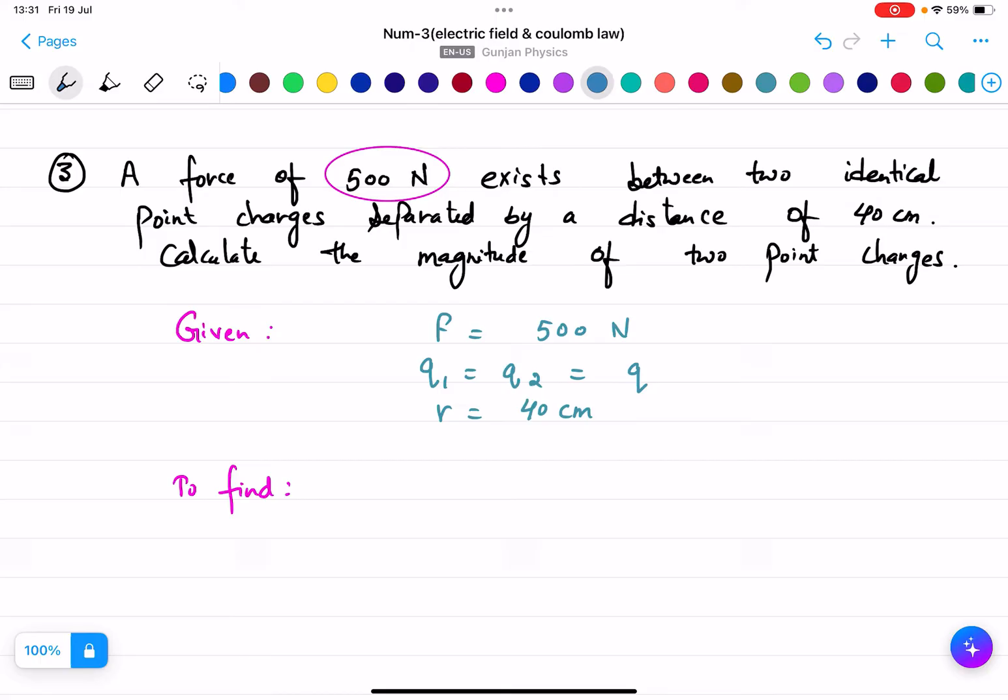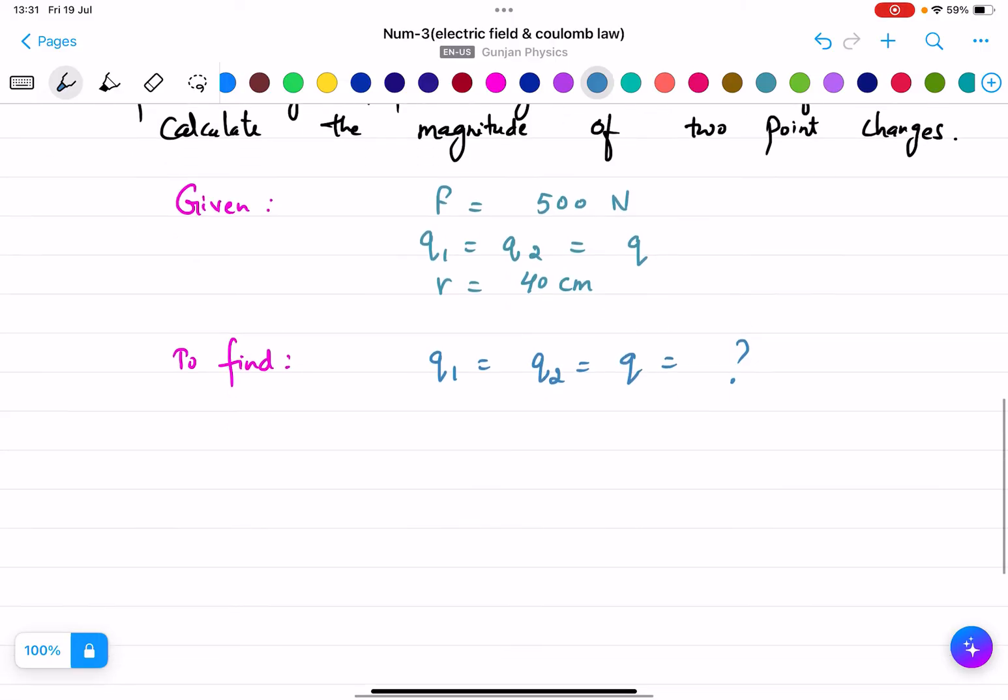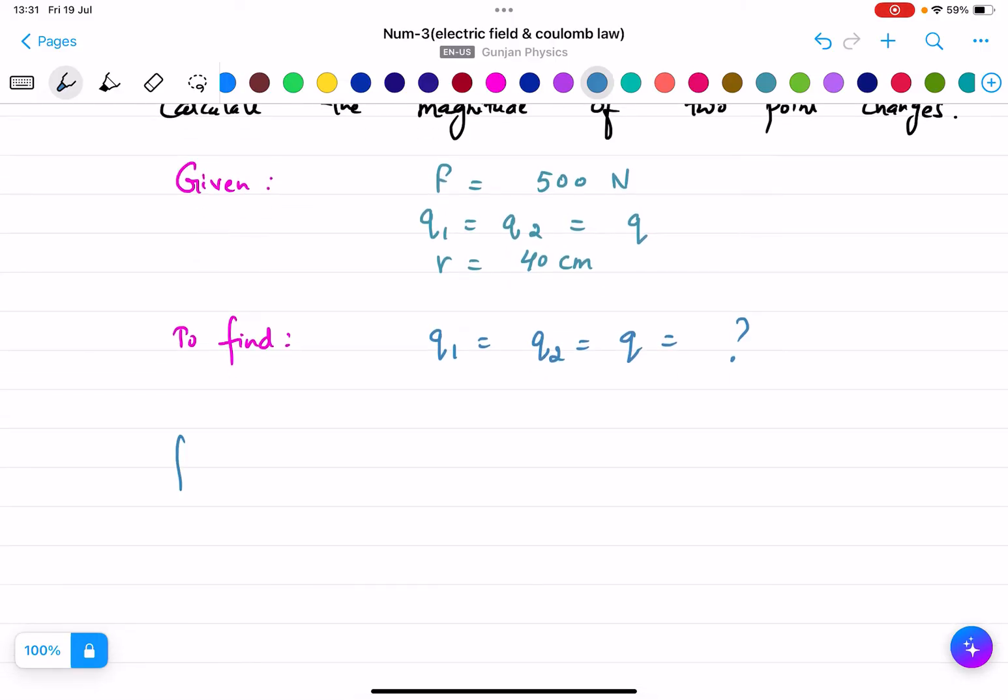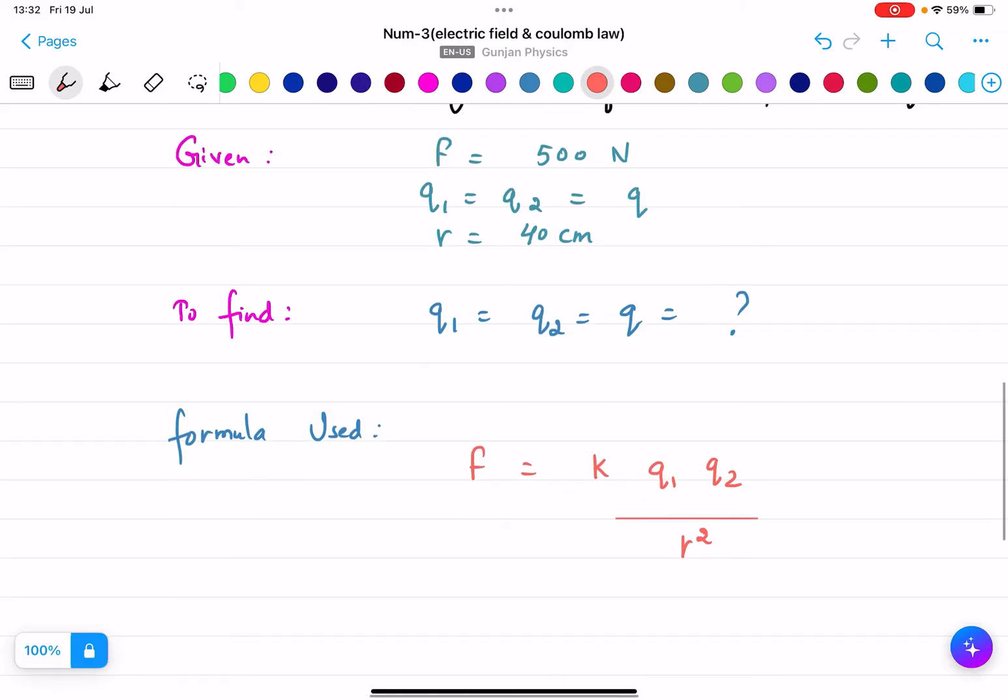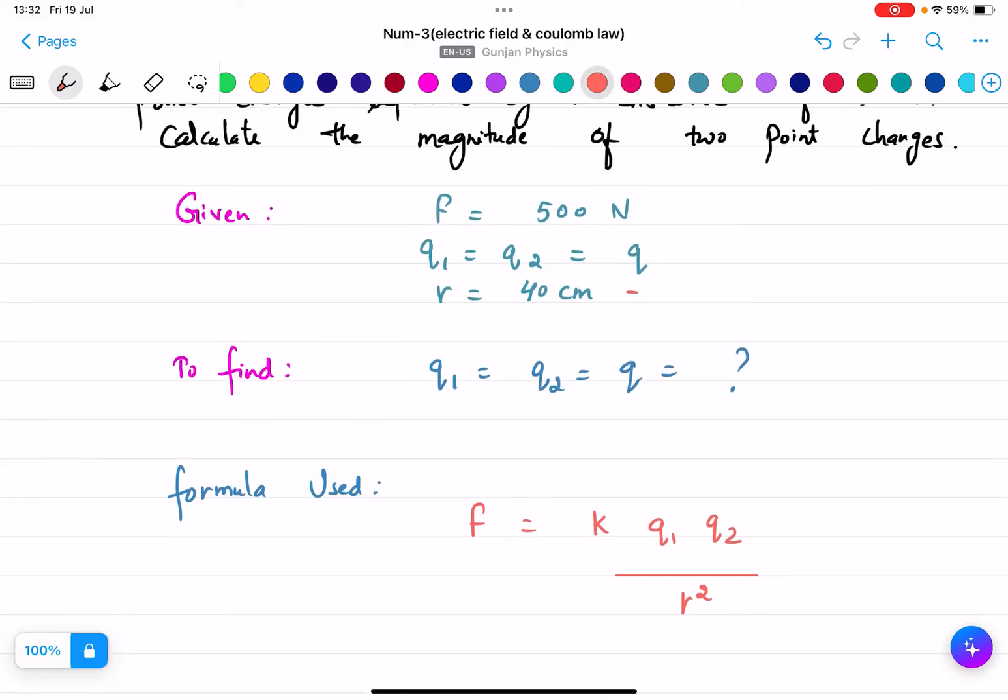To find the magnitude of the two point charges, we need to find q1, q2 equals what. Formula used: F equals k q1 q2 by r squared. First we'll change 40 into 10 to the power minus 2 meters because we need it in meters.